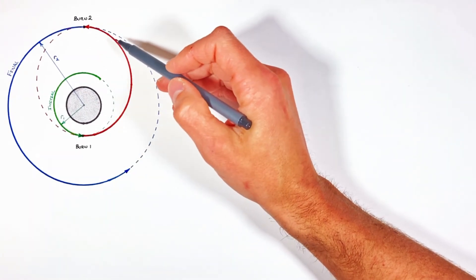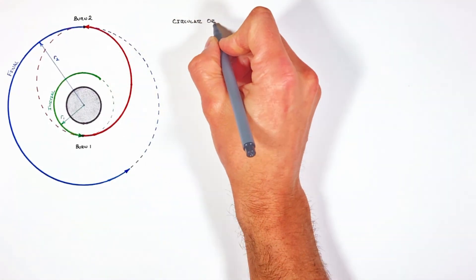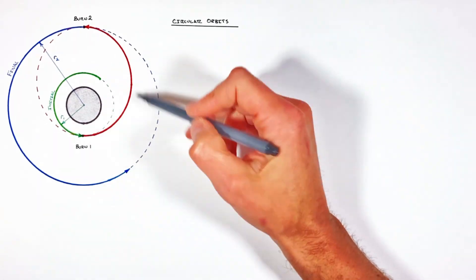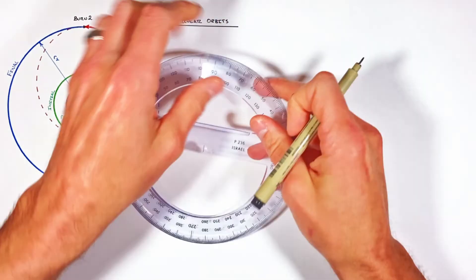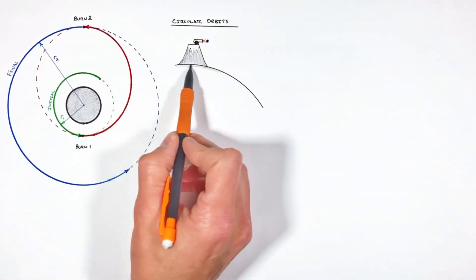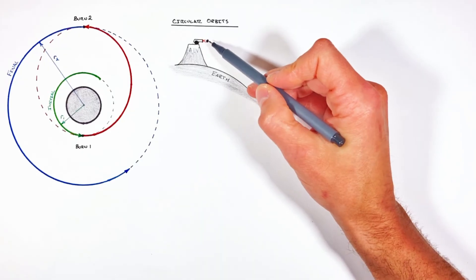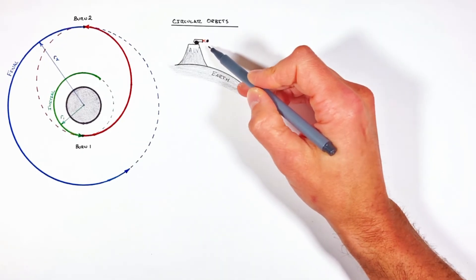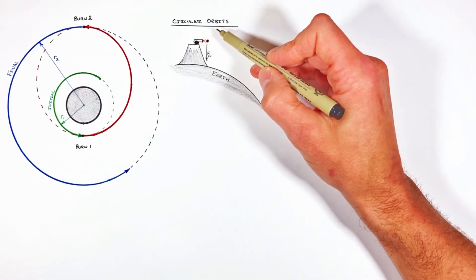If you understand the mechanics behind a circular orbit, a Hohmann transfer is not too hard to grasp. It's the basic concepts of what causes — or more importantly disrupts — circular orbits that we need to understand. So let's start our discussion of orbits right where Newton did: with a cannon atop a mountain. Newton postulated that a cannonball fired from the top of a mountain would be subject to two influences: gravity, and the inertia or tendency of the cannonball to go in a straight line.